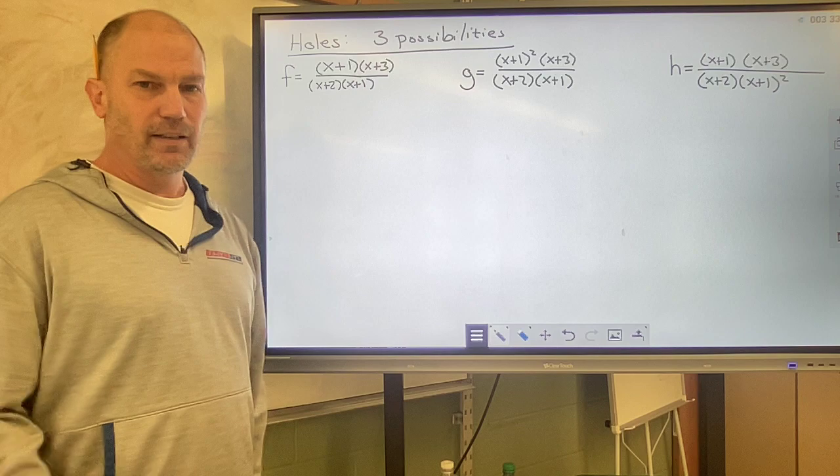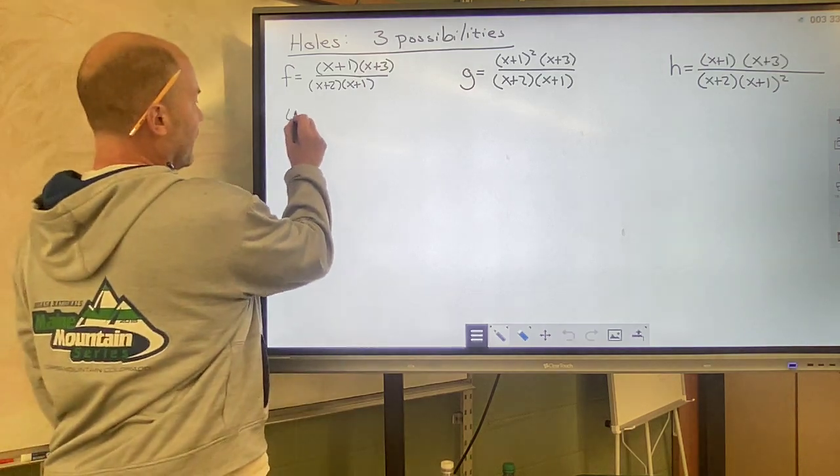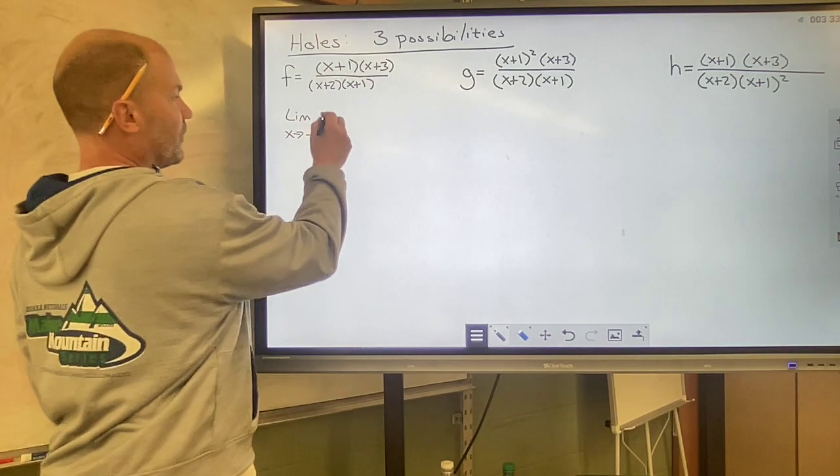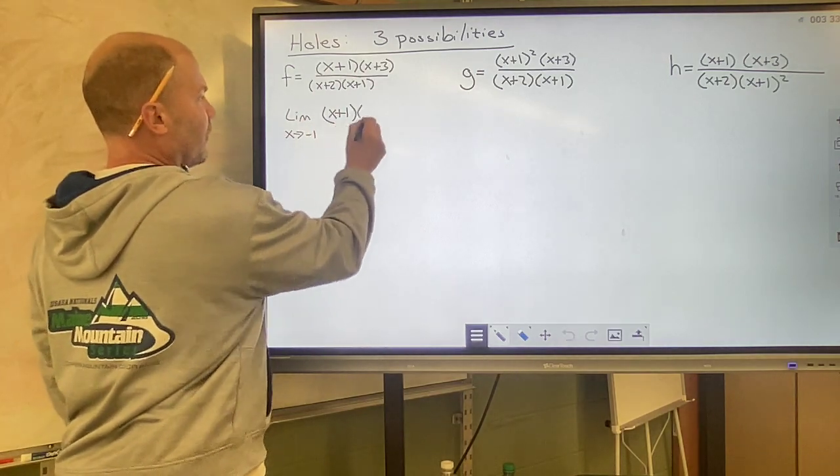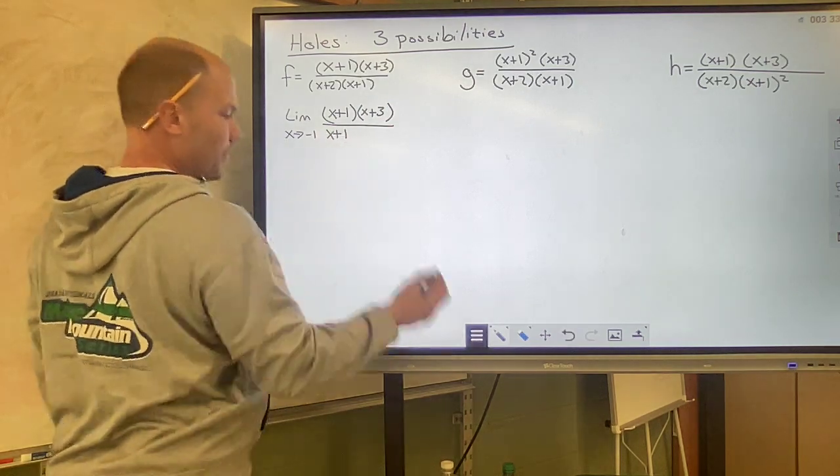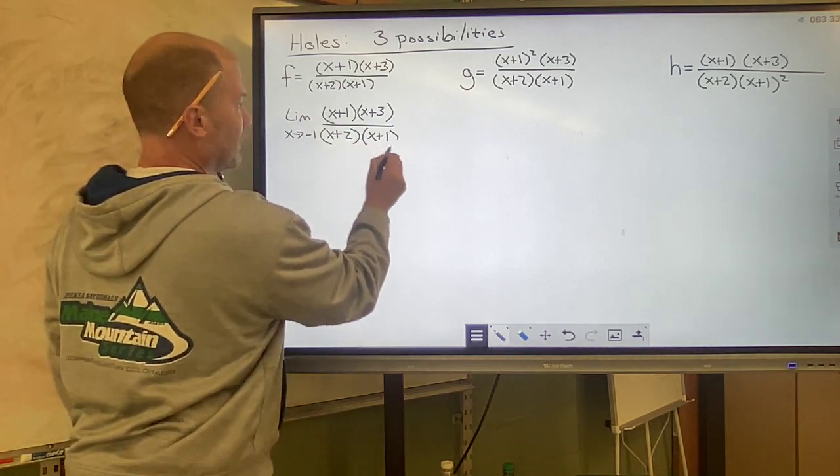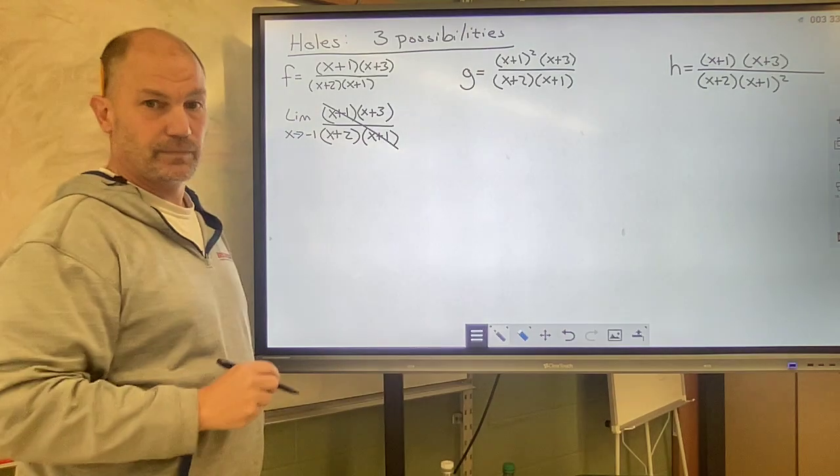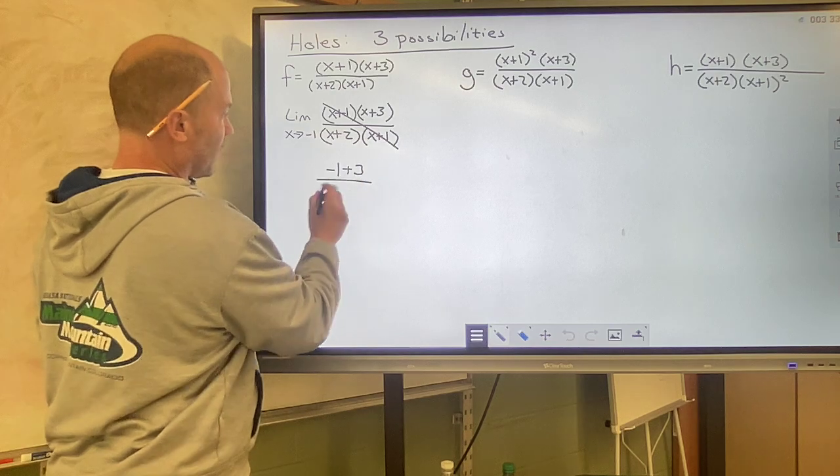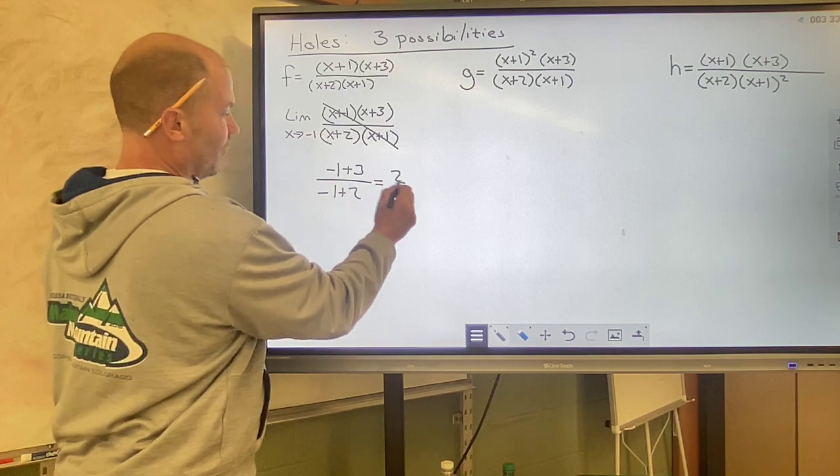So we're going to look at three different possibilities as we try to figure this out. The first is we are just going to find the limit as x approaches negative 1 of this function, and that allows us to cancel out the x plus 1s. We cancel them out. And now we plug in x equals negative 1, so we get negative 1 plus 3 over negative 1 plus 2, and what we find is that we get 2 over 1.